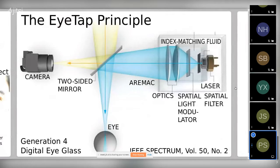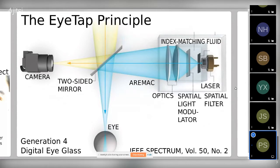The Aromac is a device I invented — its name is 'camera' spelled backwards. It reciprocates in reverse what the camera does. It's a laser scanning system that redraws onto the retina what the camera picked up. It has infinite depth of focus, so everything from the dust specs on your eye out to infinity is in perfect sharp focus.